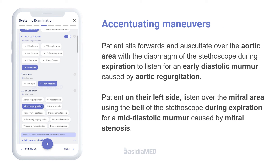Accentuating maneuvers: Sit the patient forwards and auscultate over the aortic area with the diaphragm of the stethoscope during expiration, to listen for an early diastolic murmur caused by aortic regurgitation.